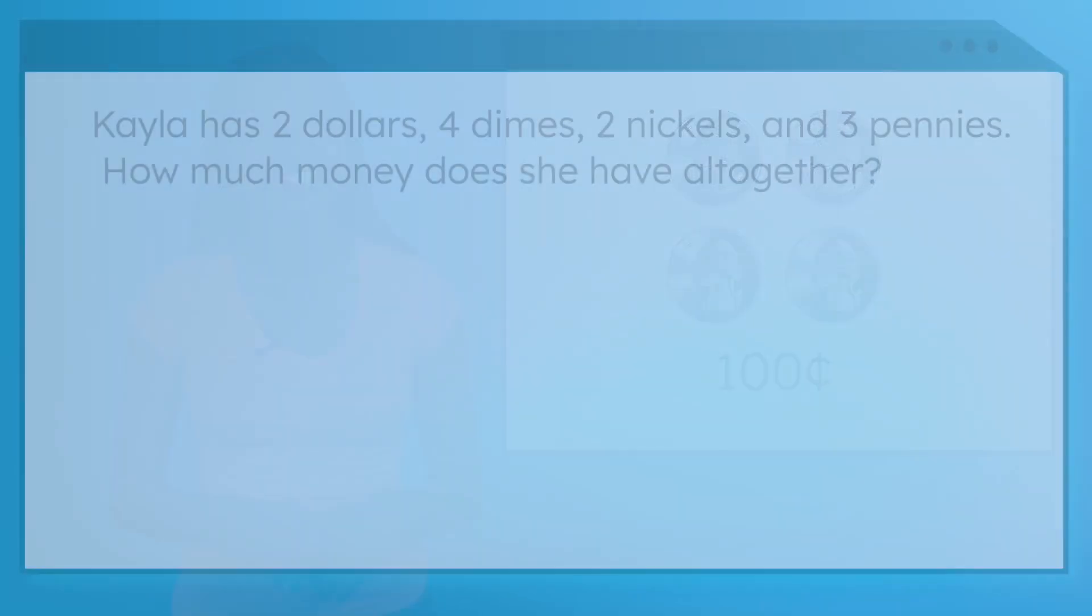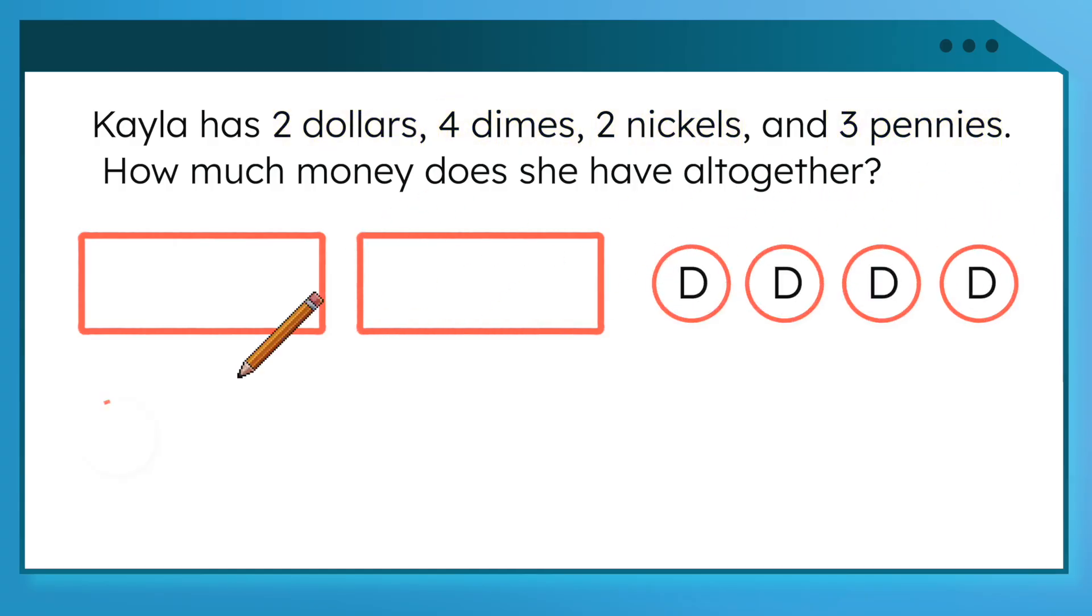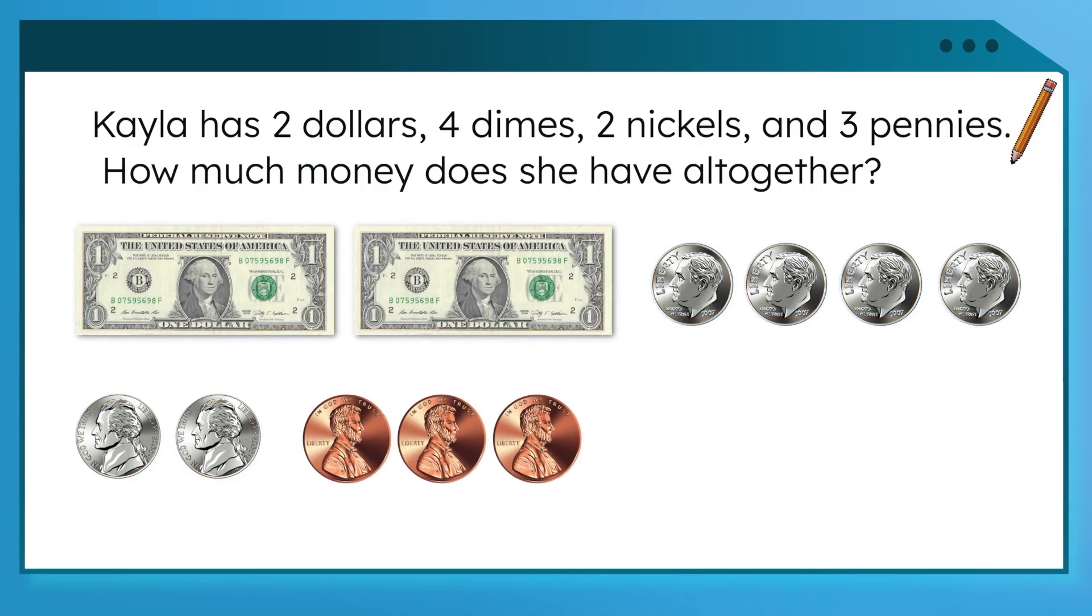Let's try another problem. Kayla has two dollars, four dimes, two nickels, and three pennies. How much money does she have all together? We have two dollars. We can write that like this with our new symbol before the number. Now we'll add our coins, starting with the coin with the largest value, which is the dimes.